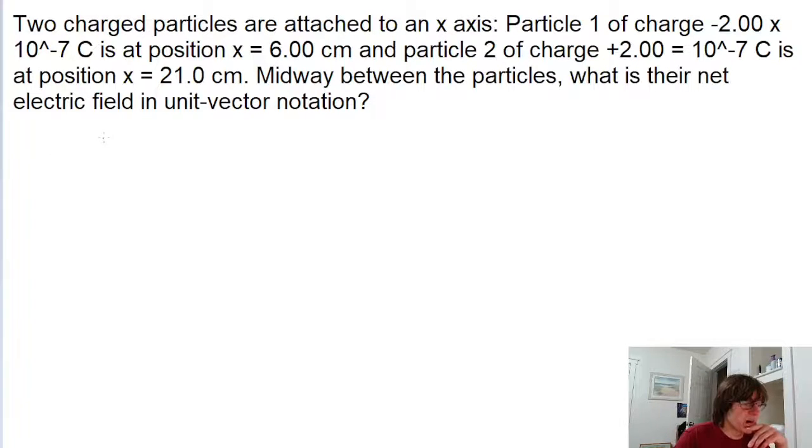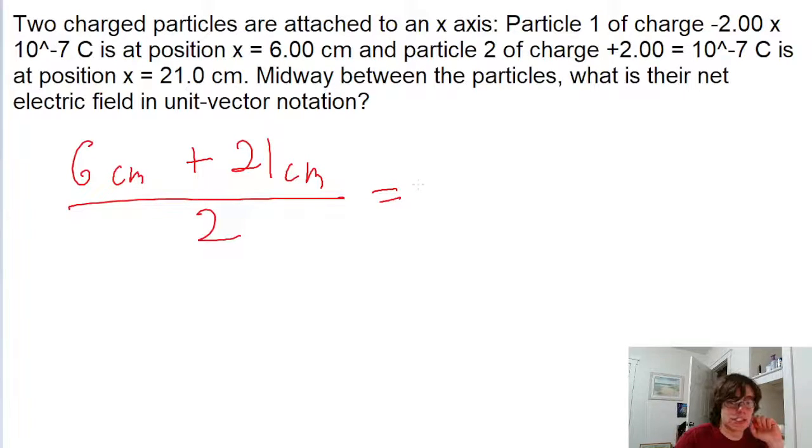We're told that one of the particles is at 6 centimeters, and another one of the particles is at 21 centimeters. So to find the midpoint between them, we add those two values together and divide by 2. And this gives us a position of 13.5 centimeters.